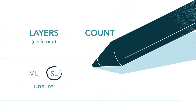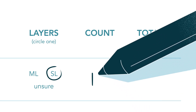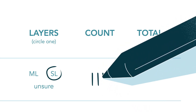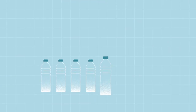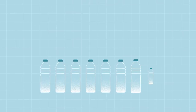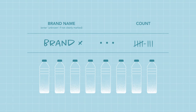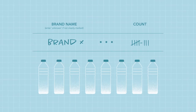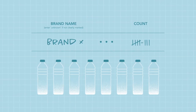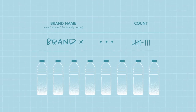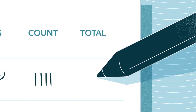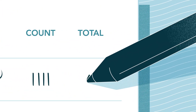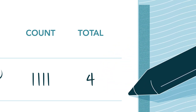Write one tally mark for this item and add another tally each time you find another item that matches it in all categories. For example, if you find eight identical brand X bottles, you will have one row with information about this bottle type and eight tally marks in the column labeled Count. Last, add up all the tally marks and write the total number of identical items in the final column labeled Total.